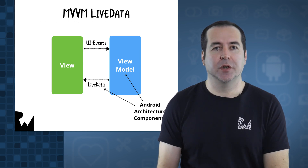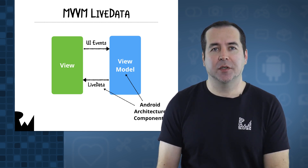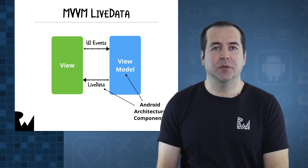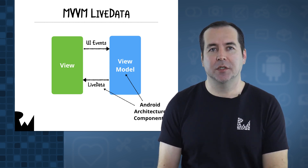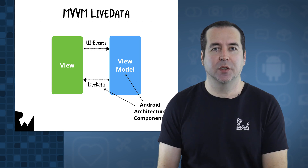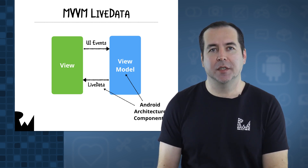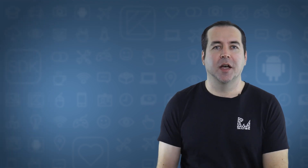One of the main benefits of using the architecture components in general is that they are lifecycle aware, and allow you to avoid the need to add code to handle configuration changes such as device rotation. We'll look at both LiveData and data binding in the course. In the next video, we'll start coding by building out the model layer of the CreatureMon app.